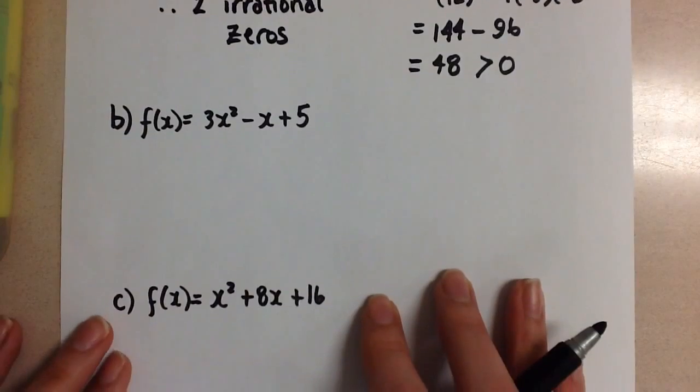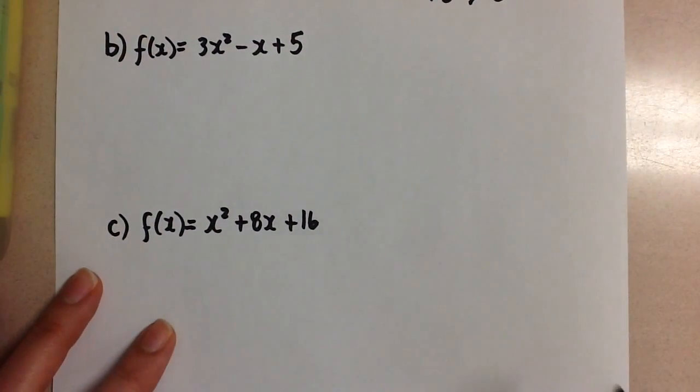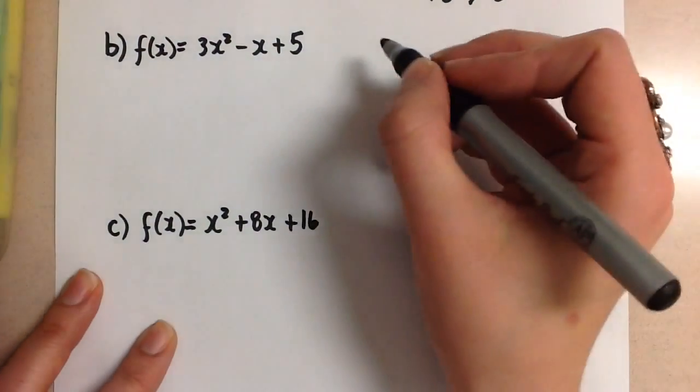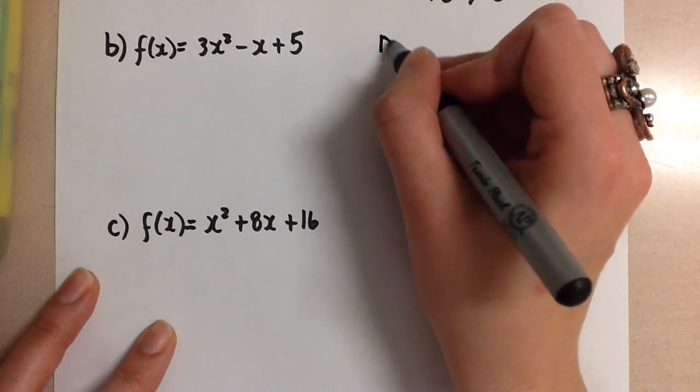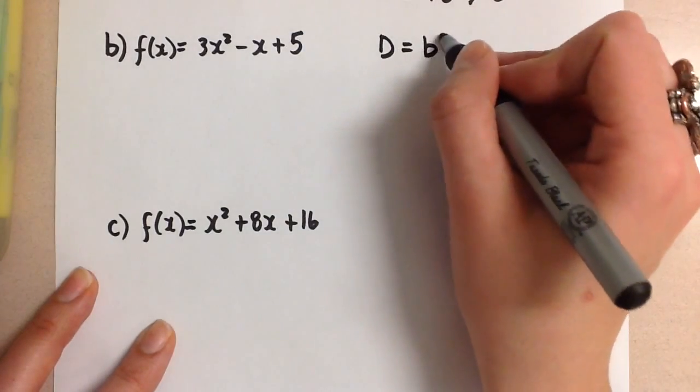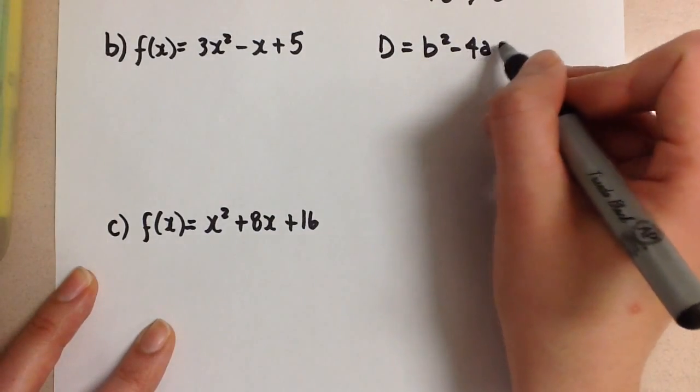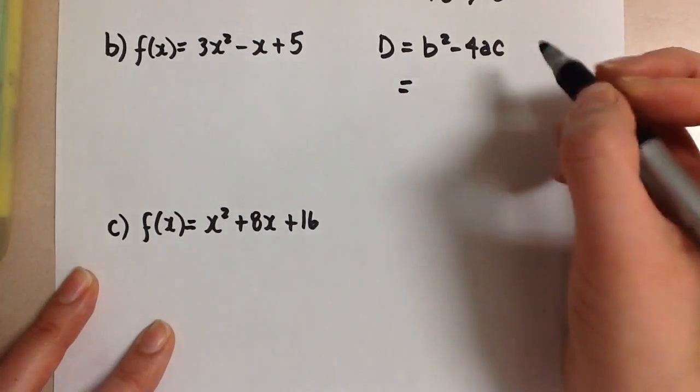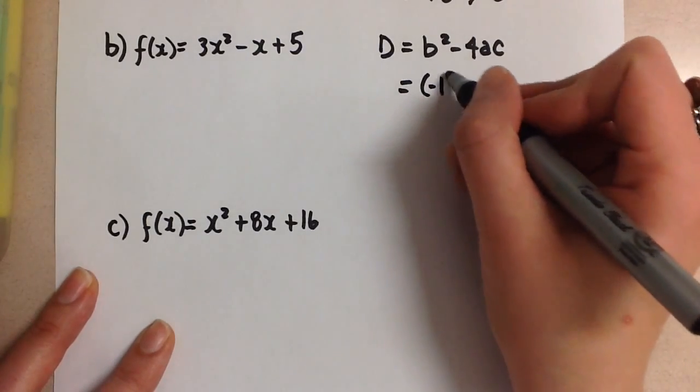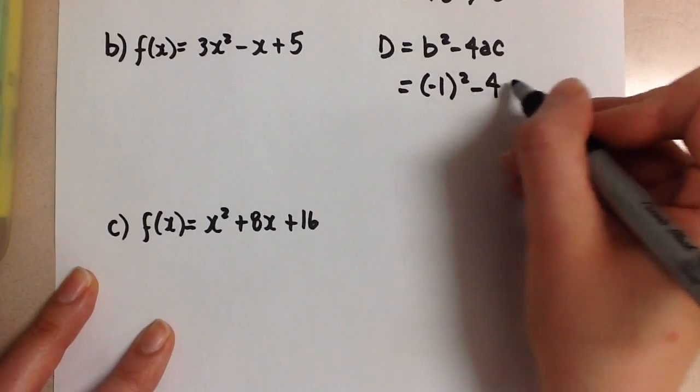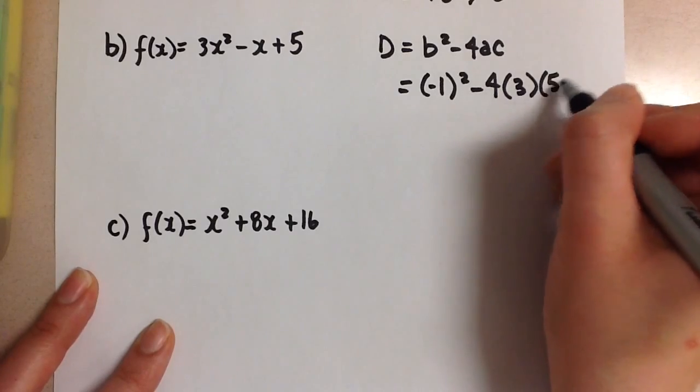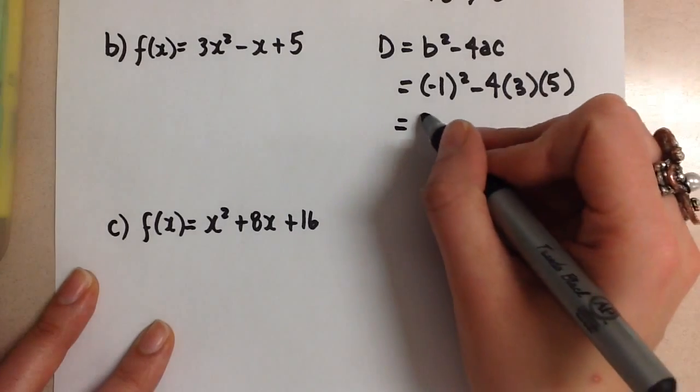Now let's go on to our next quadratic function. So again, we're going to find the discriminant for this function, b squared minus 4ac. So we have negative 1 squared minus 4 times 3 times 5. And when we evaluate this,